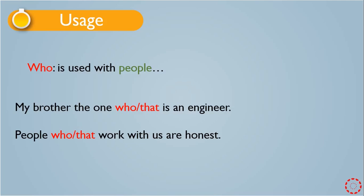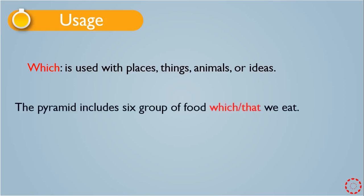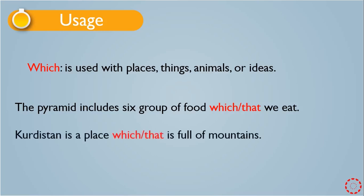Now we have 'which.' 'Which' is used with places, things, animals, or ideas. For example: 'The pyramid includes six food groups which we eat' or 'The pyramid includes six food groups that we eat.' There is no difference between using 'which' or 'that.'